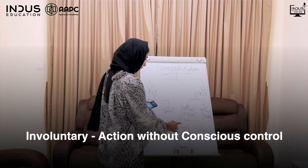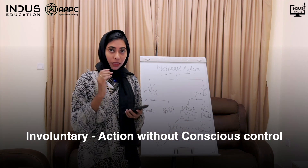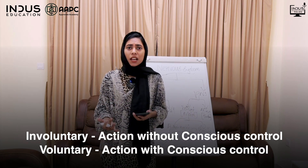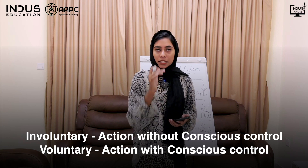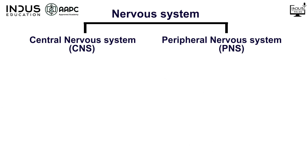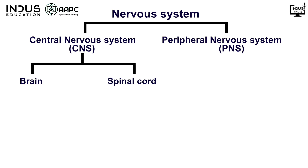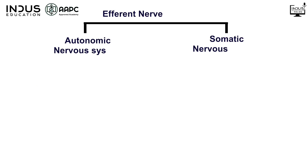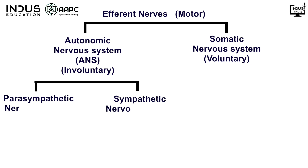Involuntary means actions that occur without consciousness. CNS stands for Central Nervous System, and PNS stands for Peripheral Nervous System. The Afferent Nervous System carries signals inward. The main divisions are: Autonomic (involuntary) and Somatic (voluntary). Autonomic is further divided into Parasympathetic and Sympathetic.